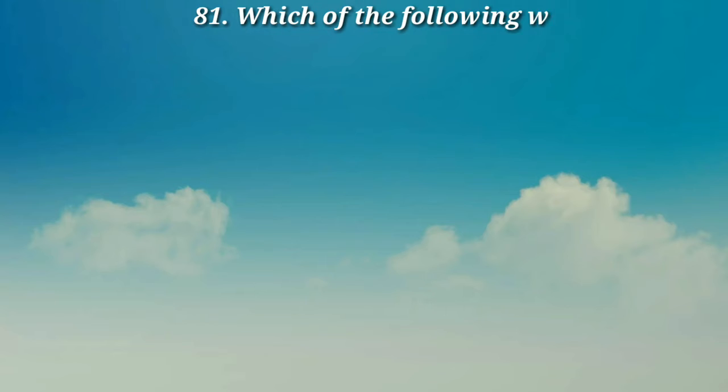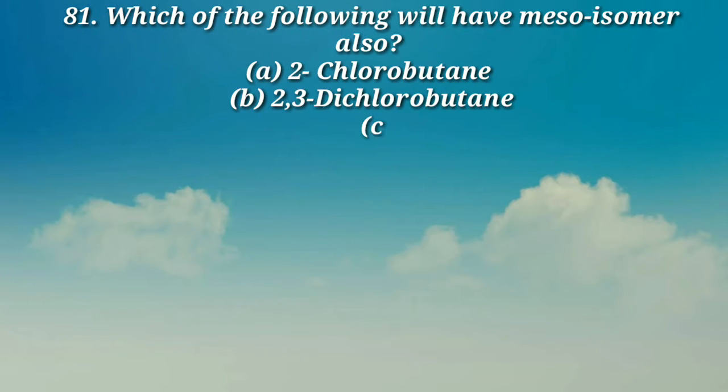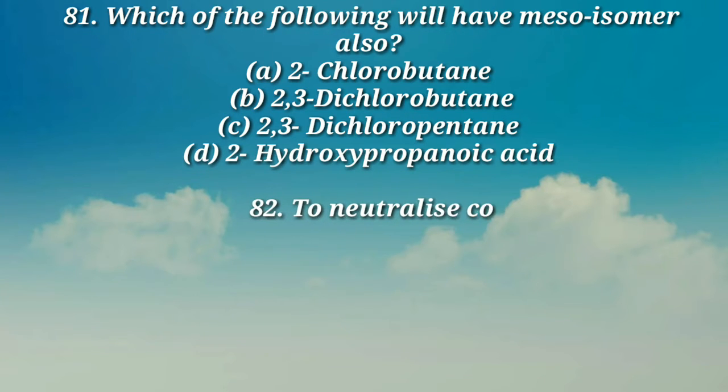Question number 81: Which of the following will have mesoisomer also? (a) 2-chlorobutane, (b) 2,3-dichlorobutane, (c) 2,3-dichloropentane, (d) 2-hydroxypropanoic acid.